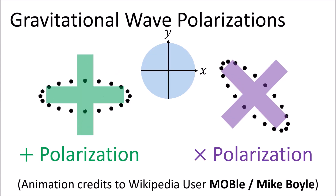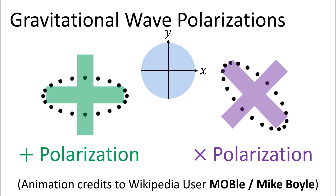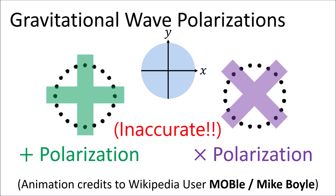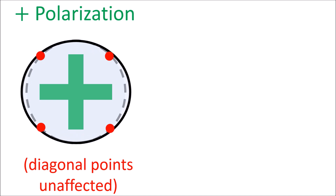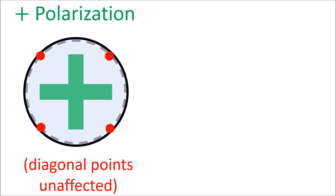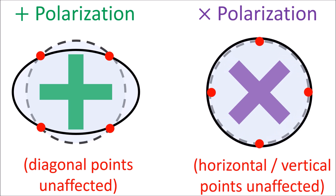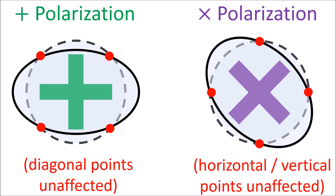I've showed animations of plus and cross polarized gravitational waves before. While the spirit of these animations is true, they are geometrically inaccurate. A plus polarized wave will leave the diagonal points on a circle completely unchanged, because for a diagonal displacement, only the A_cross part of the wave influences it. And conversely, a cross polarized wave will leave the horizontal and vertical points on a circle completely unchanged, because for the horizontal and vertical directions, the points are only impacted by the A_plus part of the wave, not the A_cross part.